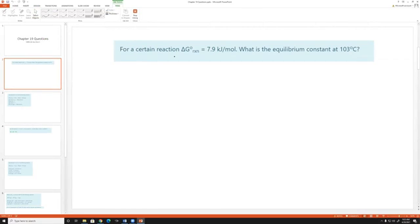The first one, for a certain reaction, delta G is 7.9 kilojoules per mole. What is the equilibrium constant at 103 Celsius? So we have an equation for this, and that equation is delta G equals negative RT, natural log of K.